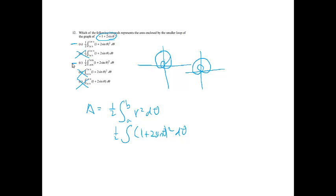Looking at the picture of r = 1 + 2sinθ — it has a large loop and a small inner loop. The smaller loop corresponds to limits 7π/6 to 11π/6, since going from negative π/6 to 7π/6 covers the larger area. So the answer for the smaller loop is choice A.